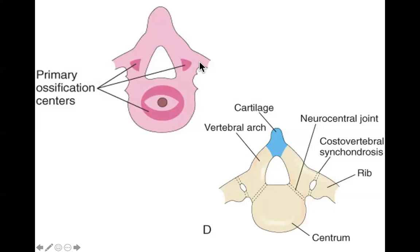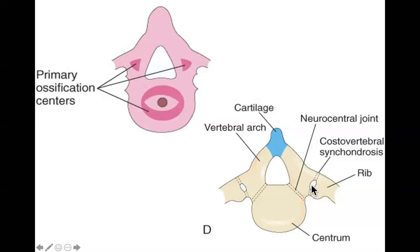As ossification spreads outward, there are areas here, here, and here that are going to remain cartilage. The reason these remain cartilage is because the neural arch has to get bigger as the spinal cord grows — this space has to be able to grow. So we leave a little band of cartilage to accommodate the spinal cord as it gets bigger. You'll see a similar thing in the cervical spine where there are little holes for the cervical artery going right through that band of cartilage — same purpose, to allow for that hole to get bigger as the kid grows.